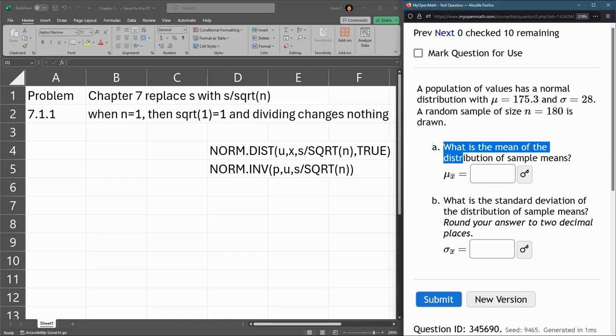Now, part A, what's the mean of the distribution of sample means? So if we keep drawing sample sizes of 180, typically their means are going to be similar to the population mean of 175.3. So the mean doesn't change. This will be 175.3 or whatever the mean is up top.